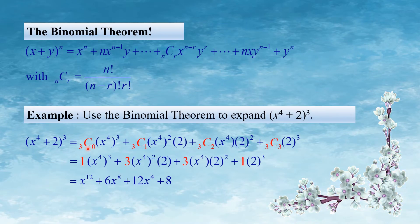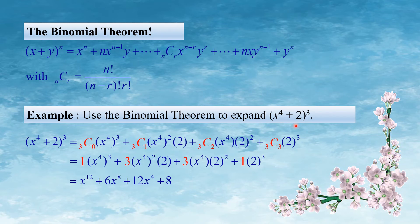So 3C0 = 1, 3C1 = 3, 3C2 = 3, 3C3 = 1. We expand these values and get: x raised to 12 plus 6 times x raised to 4 plus 12 times x raised to 4 plus 8. This is the binomial expansion.